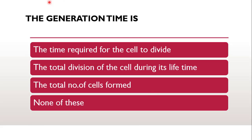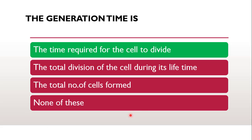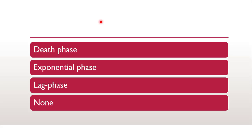Next question: generation time is whether it is the time required for the cell to divide, the total division of the cell during the lifetime, the total number of cells formed, or none of these. The correct answer is the time required for a cell to divide and double. As seen in the diagram, generation time is also known as doubling time, wherein the cell divides by binary fission and produces two separate daughter cells.